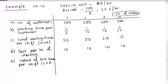Another behavior is reneging. Reneging is when a person has already joined the queue but becomes very impatient. Maybe one customer is taking a lot of time due to a credit card problem or a check issue, and this waiting customer becomes so impatient that they decide to leave the queue. That is reneging.